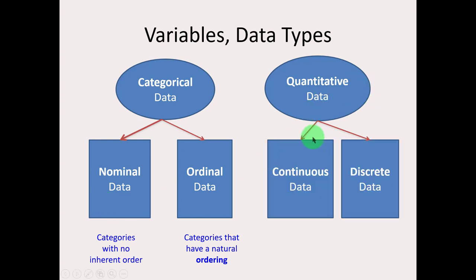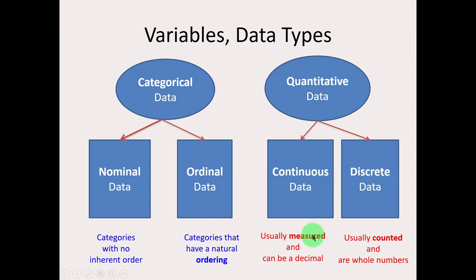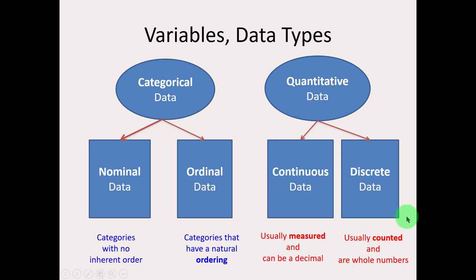On the other side, where we have quantitative data, we have continuous or discrete. Continuous variables are generally measured and can take on decimals — if you can have half of something, it's probably continuous. For instance, temperature varies and is measured, and you can have half a degree Celsius or half a degree Fahrenheit. Discrete data is generally counted, so these are whole numbers. For example, the number of days that exceed 100 degrees — you would count those days. Countable whole numbers are discrete variables.